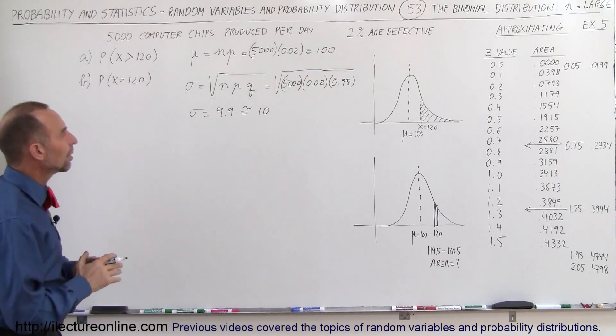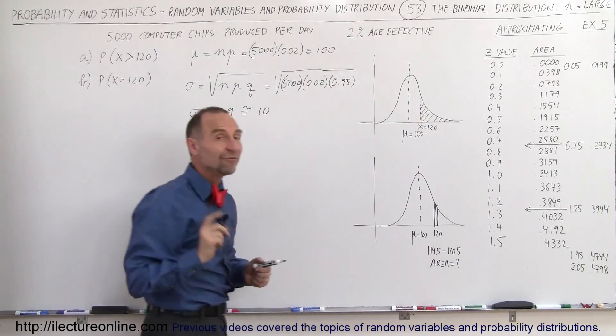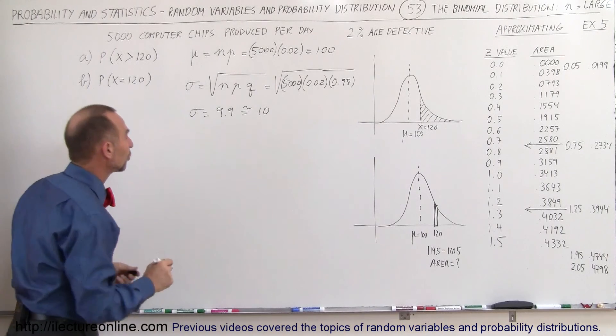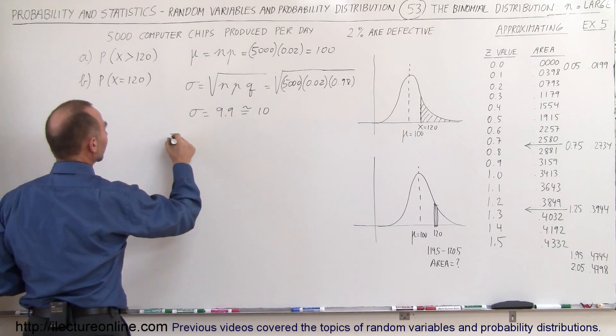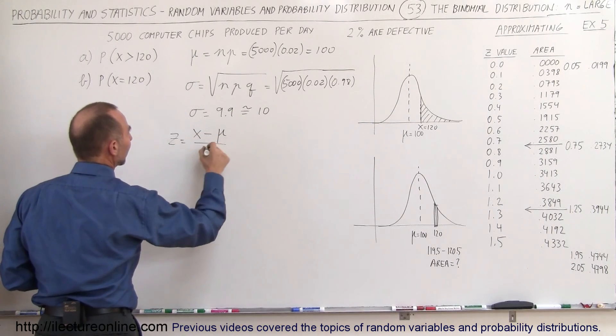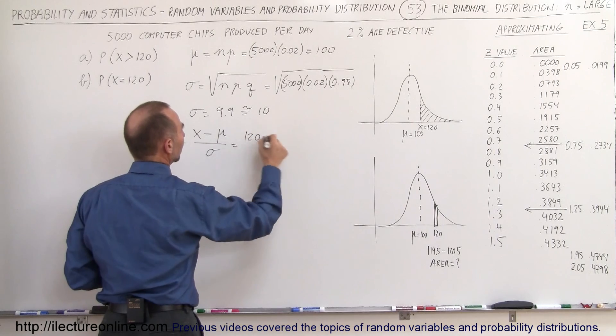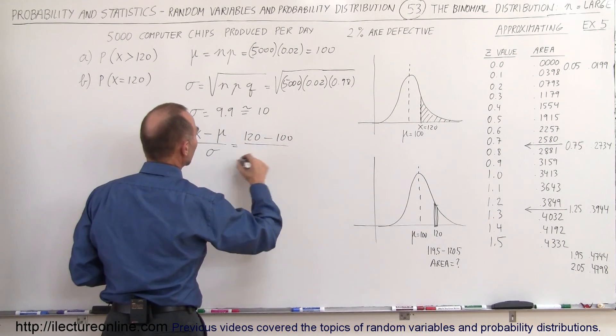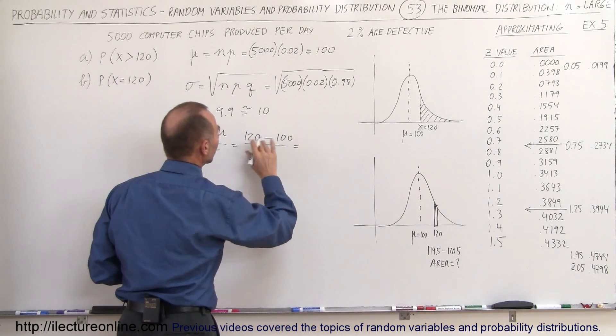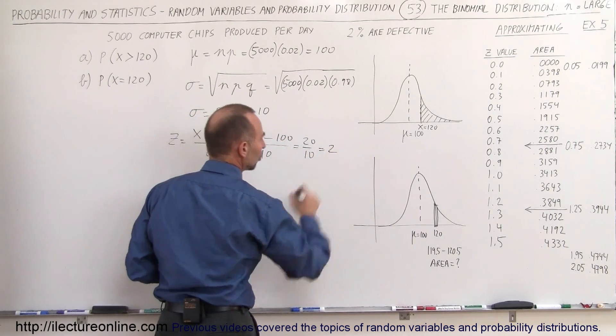The next thing we want to do is find this area, which means we want to find the Z value for X equals 120. So the Z value is equal to X minus the expected value divided by the standard deviation. X would be 120, expected value 100, standard deviation would be 10. So that would be 120 minus 100, that's 20 divided by 10, which is equal to 2.